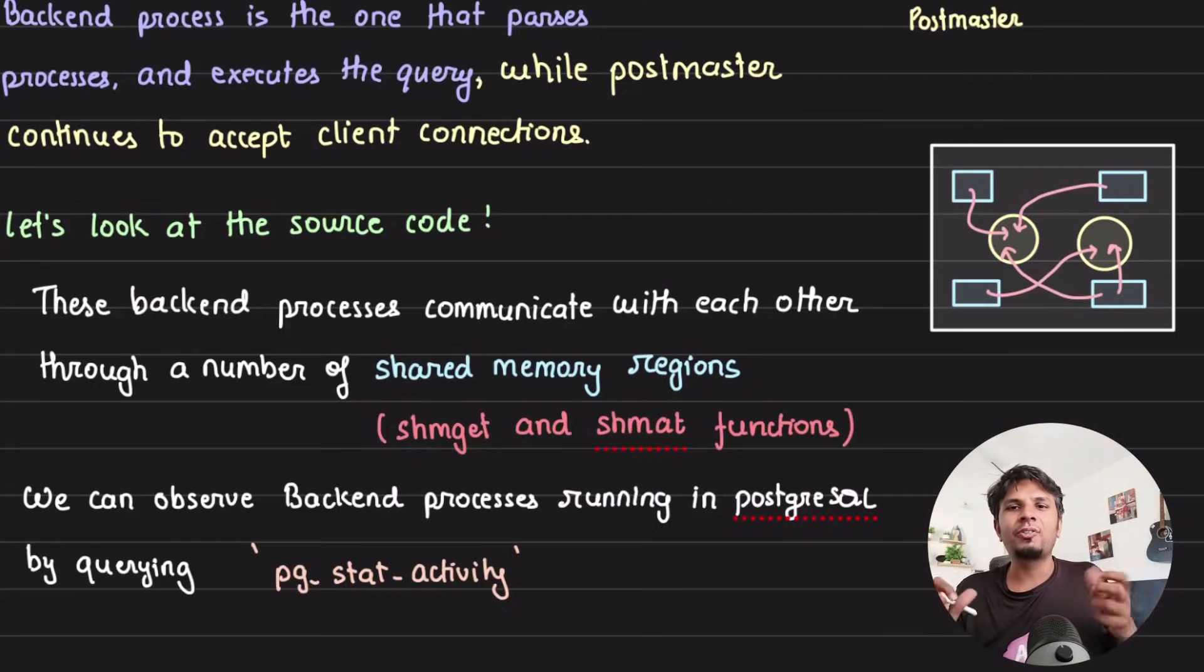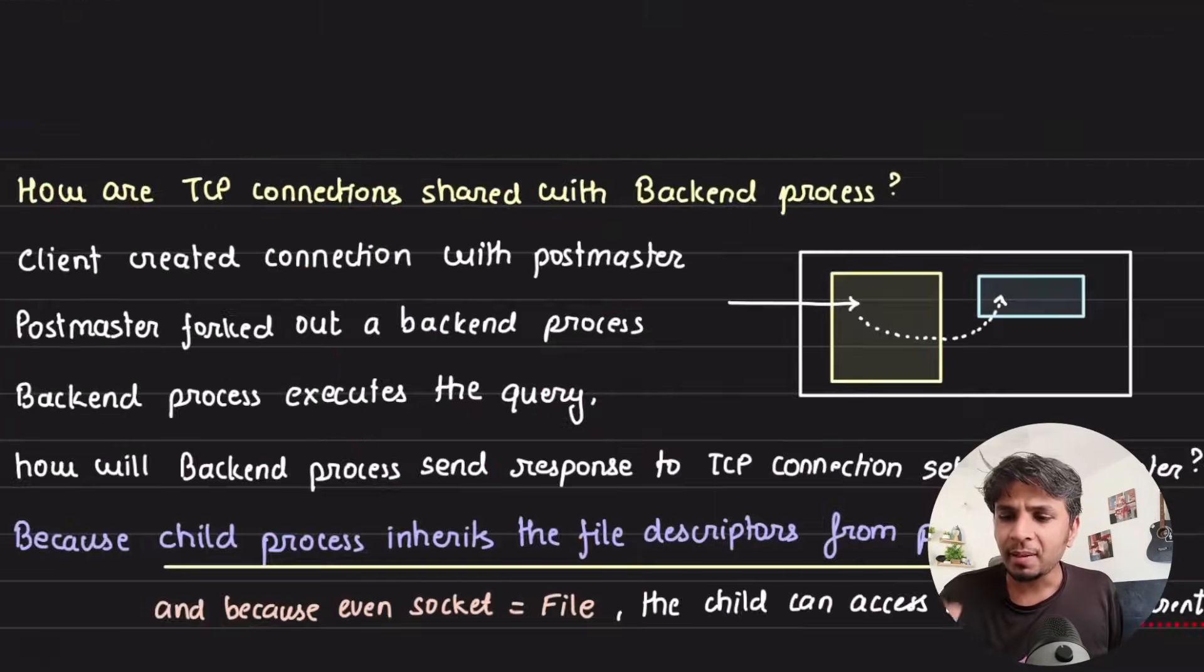So it's very fascinating if you are interested in shared memory and how to use it. Two system calls or two functions that would help you understand is shm_get and shm_at. Just go through these functions, try a quick prototype on that, you'll have fun doing it. And if you really want to look at N processes spun up for N clients connected, just fire a query on pg_stat_activity table when a client connects to it, and you can see the number of processes running there.